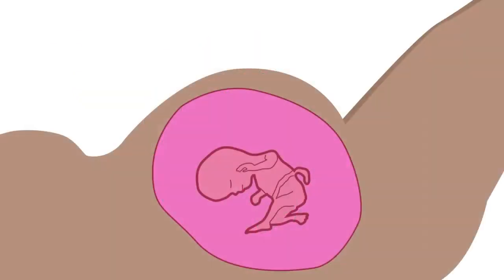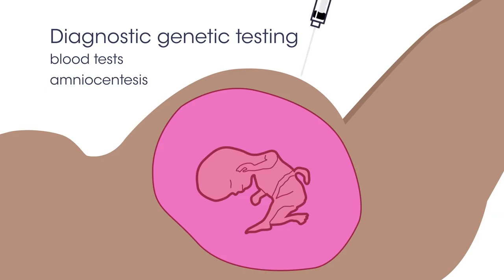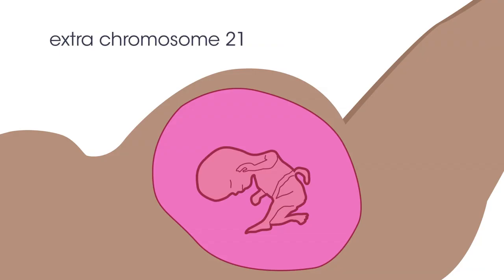In some countries, people who are pregnant are offered diagnostic genetic testing for Down syndrome. This can be done by blood tests or amniocentesis, which involves taking a sample of the amniotic fluid surrounding the fetus in the uterus and looking at the number of chromosomes in those cells to see if any have the extra chromosome 21. Having the tests may be the choice of the parents and will allow them to be more prepared for a baby with Down syndrome or choose to have an abortion.